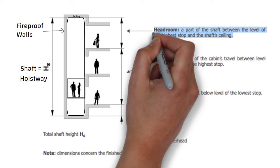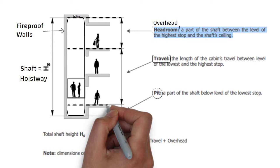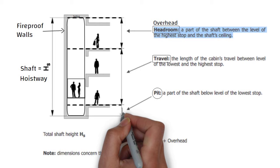Headroom, also known as overhead, is the part of the shaft between the level of the highest stop and the shaft ceiling. Travel Height is the length of the cabin's travel between the level of the lowest and the highest stop. Pit is the part of the shaft below the level of the lowest stop.